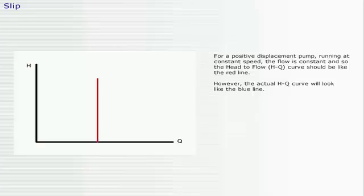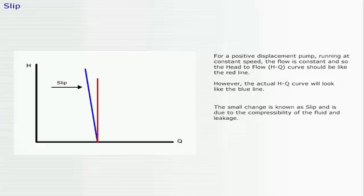For a positive displacement pump running at constant speed, the flow is constant, and so the head-to-flow curve should be like the red line. However, the actual head-to-flow curve will look like the blue line. The small change is known as slip, and is due to the compressibility of the fluid and leakage.